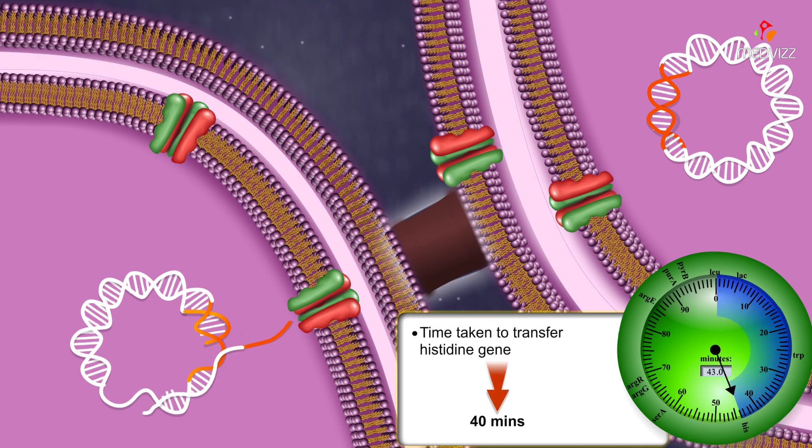It takes over 40 minutes for the histidine operon to transfer, so it must be nearly halfway around the chromosome from the fertility factor.